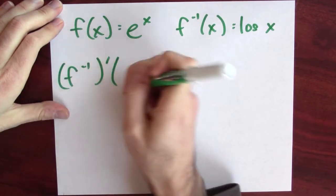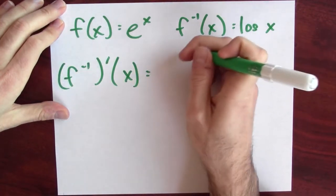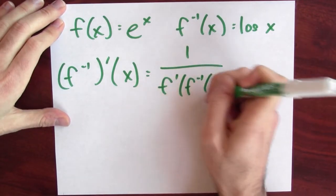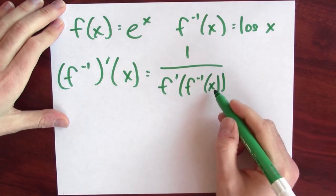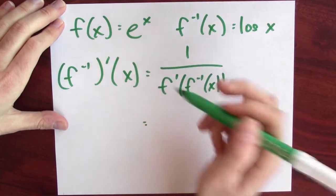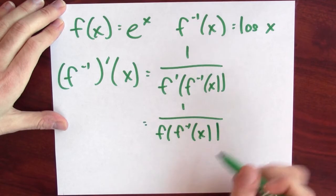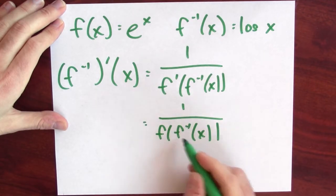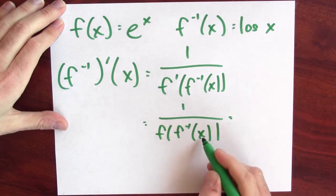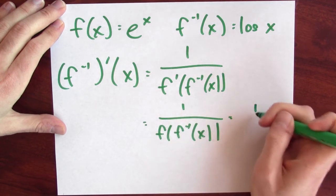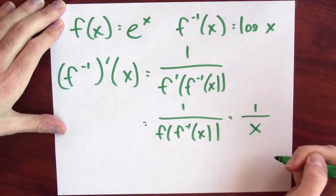The derivative of the inverse function is 1 over the derivative of the original function evaluated at the inverse function of x. Now, the neat thing here is that the derivative of e to the x is itself. So f prime is just f, and I'm left with f of f inverse of x. It's e to the log of x. But log of x tells me what I have to plug into e to get out the input. F of the inverse function of f is just the same input again. So this is 1 over x. The derivative of log x is just 1 over x.